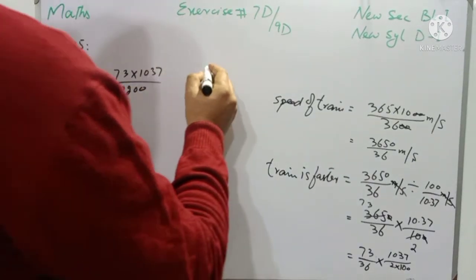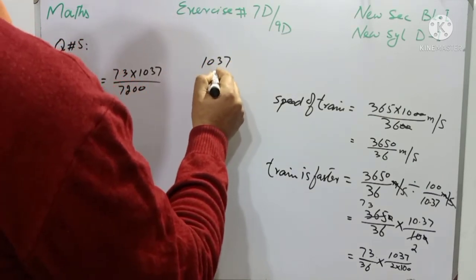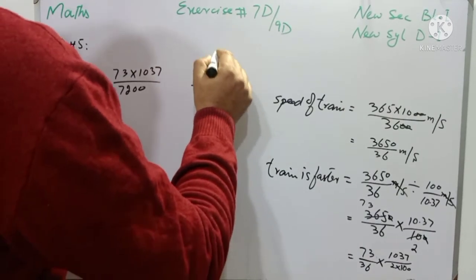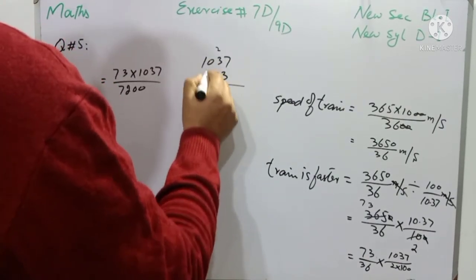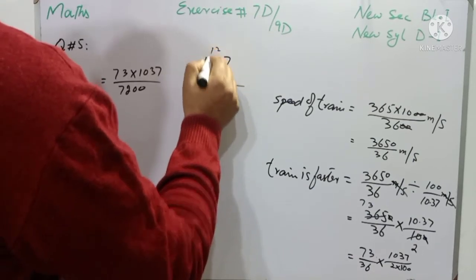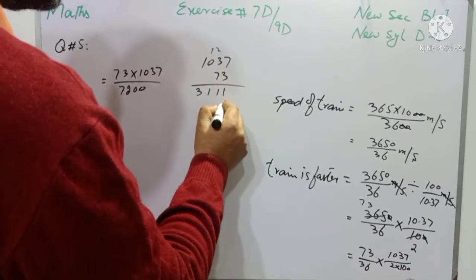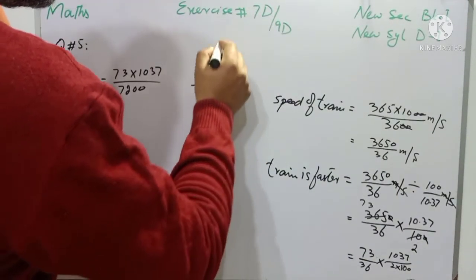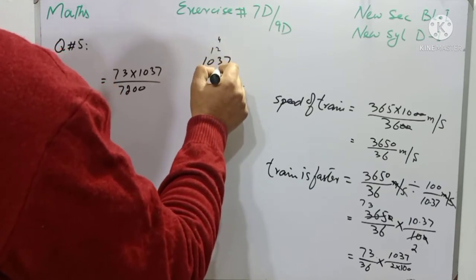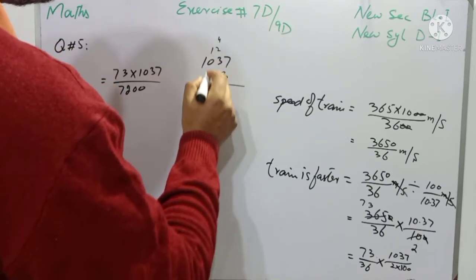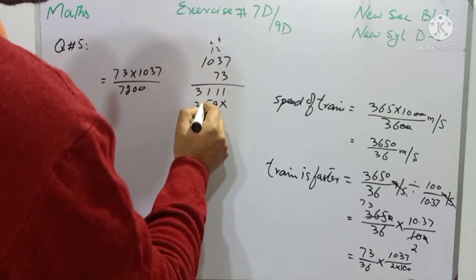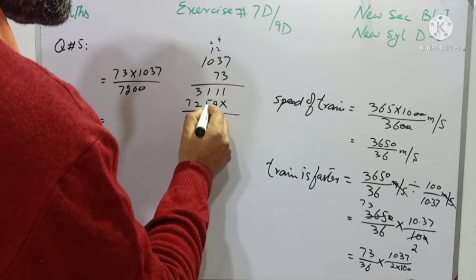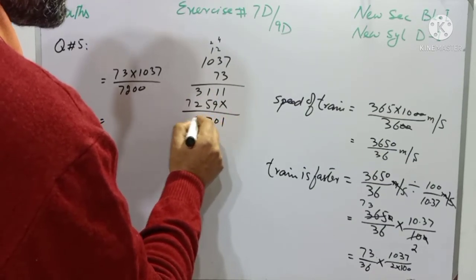Now students, I will multiply 10.37 with the table with 73. 3 7's are 21, and 2 carry. 3 3's are 9, and 2, 11, and 1 carry. 3 0's are 0, and 1 mean 1. And 3 1's are 3. Then cross below the unit digit. 7 7's are 49, and 4 carry. 7 3's are 21, and 4, 25, 2 carry. 7 0's are 0, and 2 mean 2. And 7 1's are 7. And it is 1, 0, 5, 6, 7, 5 and 7, and it is written as 75,701 over 7200.